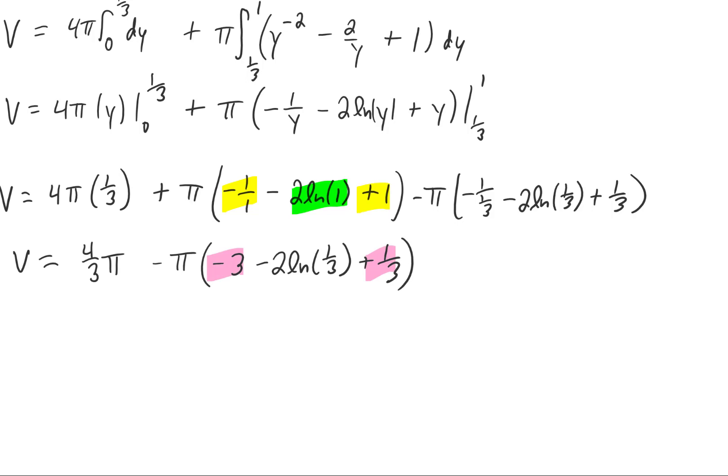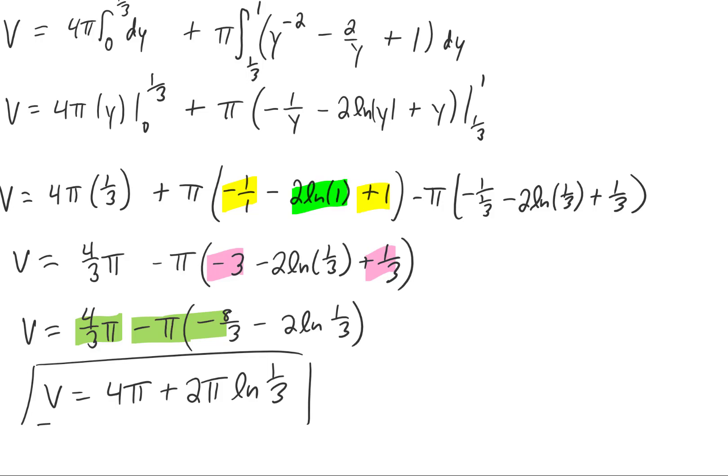We can combine our like terms here. Now you'll notice that this four-thirds pi and this positive eight-thirds pi can be combined to give us twelve-thirds pi, which is just four pi. The last term doesn't really simplify. Don't forget that we have to distribute that pi through the parentheses, and our final answer looks something like this.